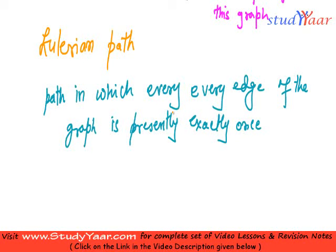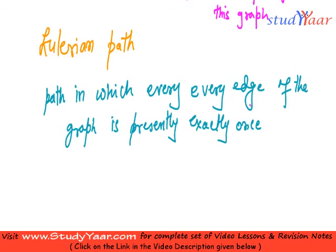Now let's talk about something called a Eulerian path. We say a path in which every edge of the graph is present exactly once. We are focusing on every edge, and each edge should be present once. If that is the case, then the path is known as a Eulerian path.